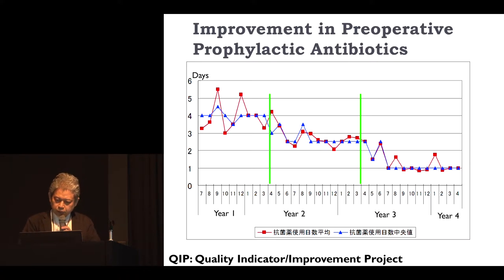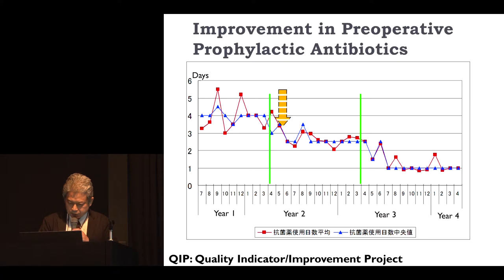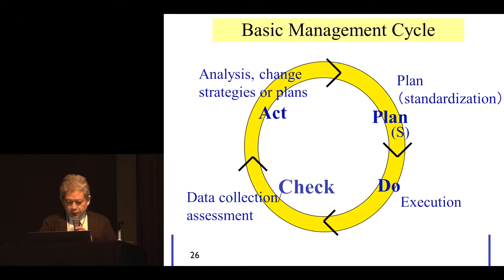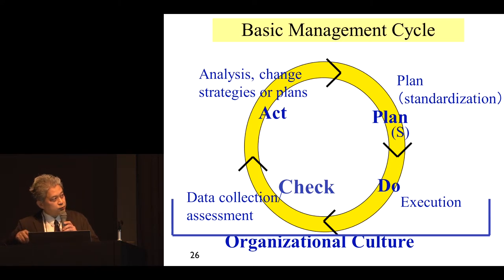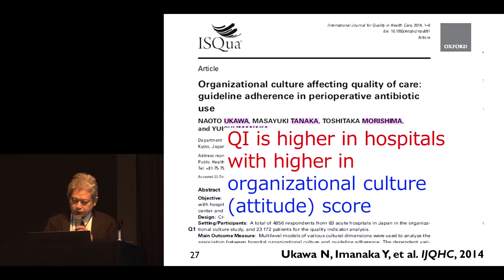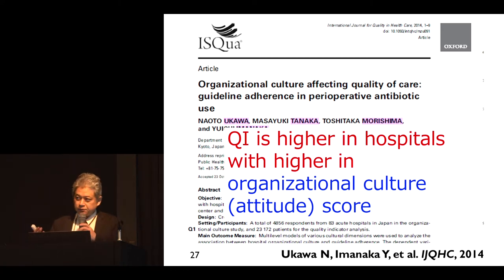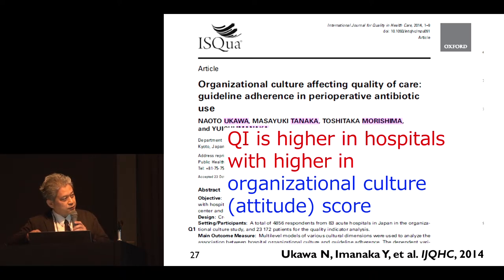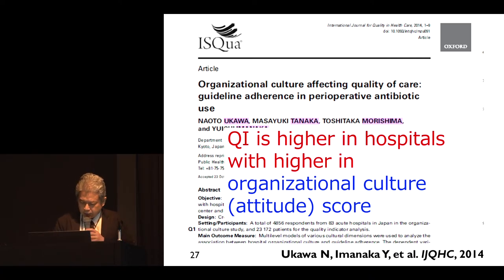This is a case of preoperative prophylactic antibiotics — we used to use long-duration antibiotics, but now that has been reduced. There are many approaches for improvement. For the improvement cycle, organizational culture of institutions is very important. We have also found that when organizational culture is positive — meaning teamwork is very good, communication is good, and people perceive they are professionally growing — the quality indicator is higher than in other institutions.